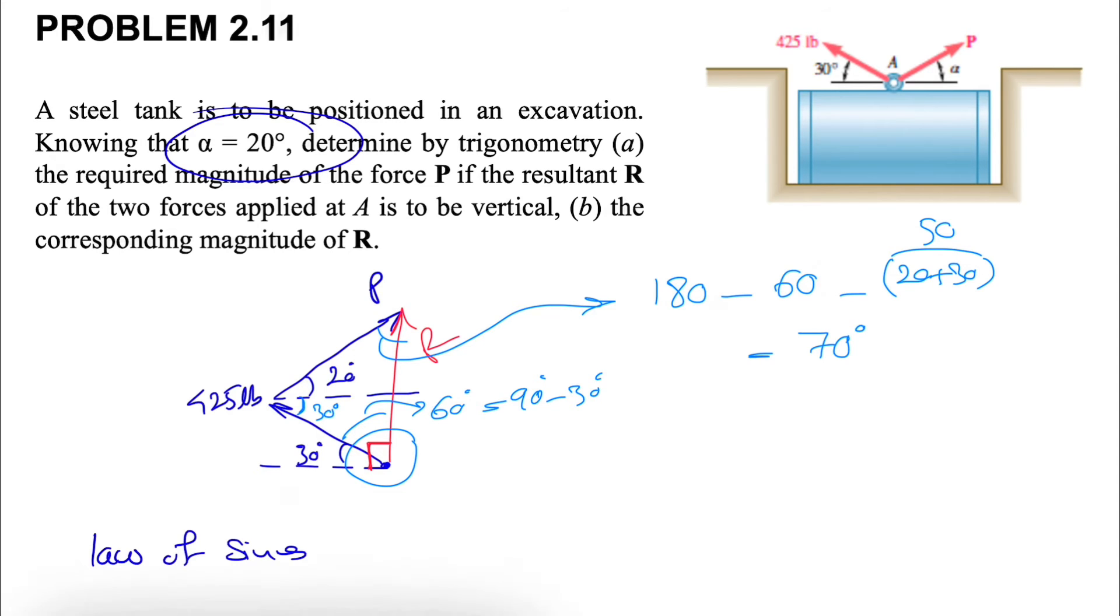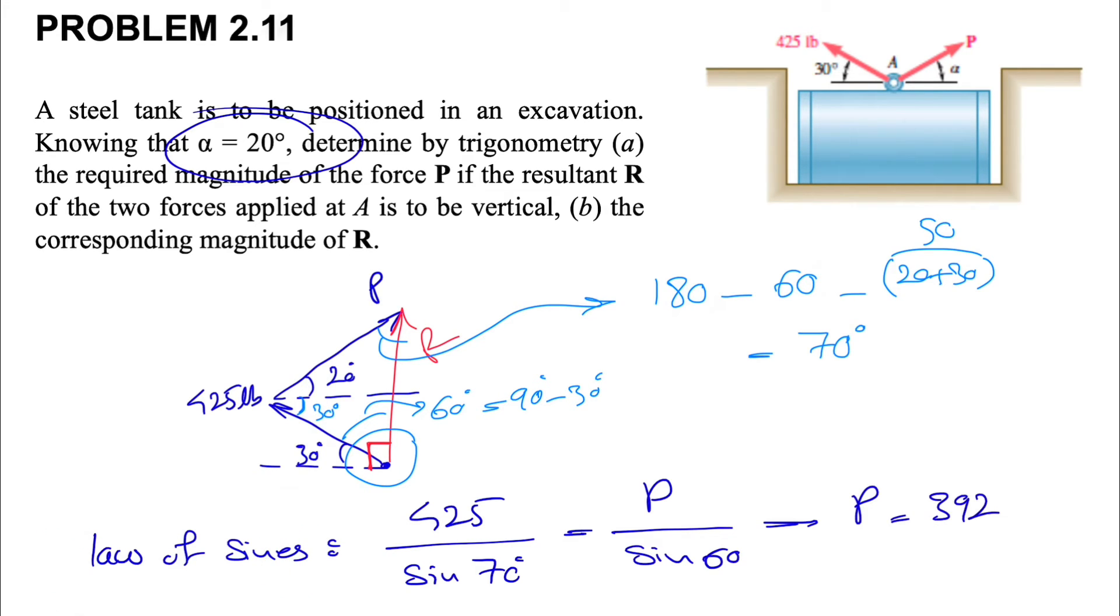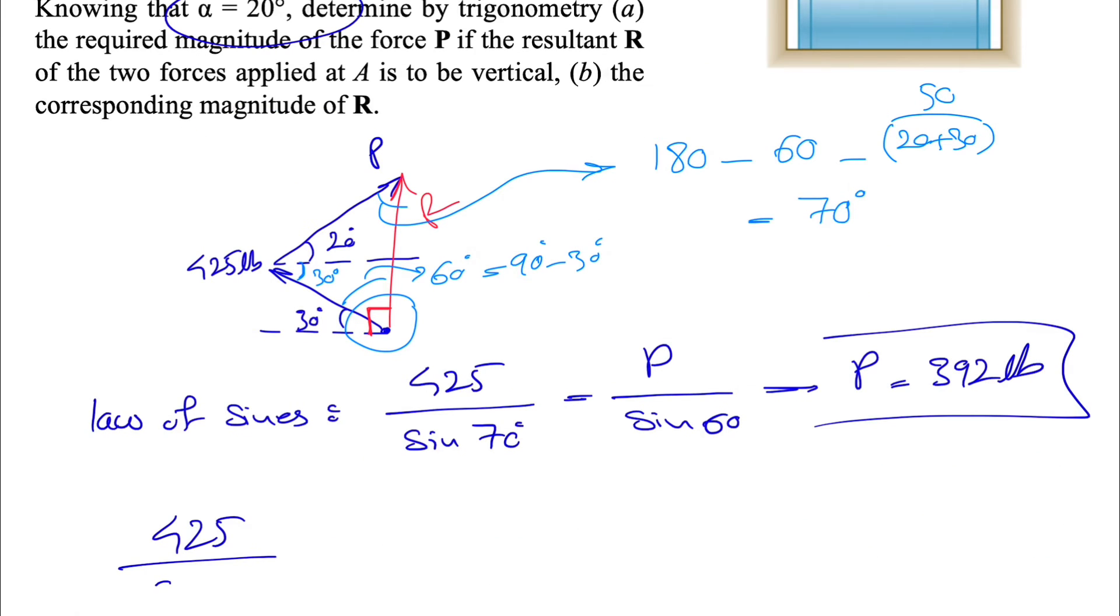Now that we have everything, we can use the law of sines. For that, we have each force divided by the sine of its opposite angle. For 425 we have sine of 70 degrees, for P we have sine of 60 degrees. From this we can find P, which gives us 392 pounds.